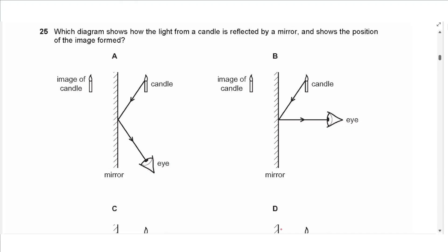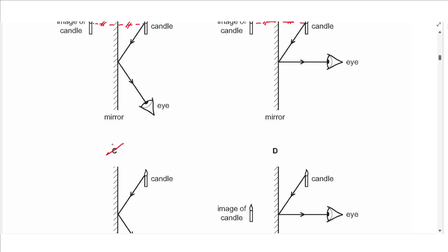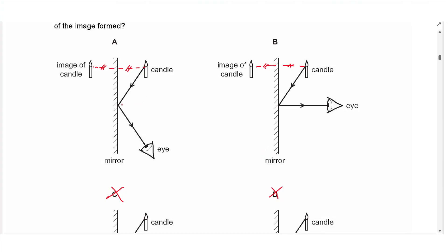Question 25: Which diagram shows how light from a candle is reflected by a mirror and shows the image position? The image is always behind the mirror at the same distance as the object is in front. Checking options A and B — in A, the angle of incidence equals the angle of reflection, which is correct. In B, the angles are not equal. Options C and D show images not correctly placed. Answer is A.